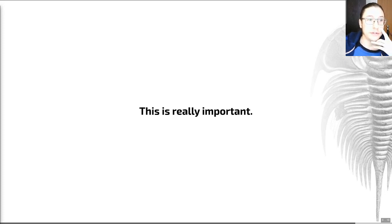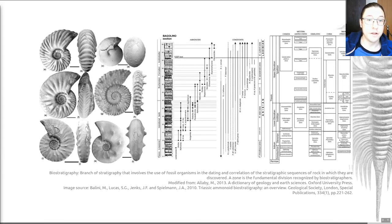The final thing I wanted to highlight, and this is really important, and I'm going to come back to this in group after group, and I'm going to start off by highlighting it in the trilobites, is that fossils are used to date rocks. This is really important. Fossils date rocks. This is something that's called biostratigraphy, and I've put a definition of biostratigraphy on this slide here. It's a branch of stratigraphy that involves the use of fossil organisms in the dating and correlation of the stratigraphic sequences of a rock in which they are discovered. A zone is the fundamental division recognized by biostratigraphers. There's a lot of words there, but another way of putting this is that the organization of sedimentary successions is based on biological events and their records in the rock. Fossils can correlate and date rocks.